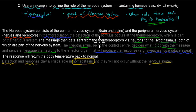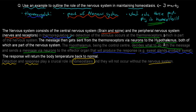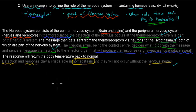The thermoreceptors detect the change, the hypothalamus — which is part of the nervous system — responds to that change and sends a signal to the effector organs, which then make the response happen. We get one mark for giving the specific example, which was thermoregulation. We get marks for discussing the role of the thermoreceptors, the hypothalamus, and the neurons — those give us two marks. Including the final statement about detection and response being crucial to homeostasis gives us three out of three.